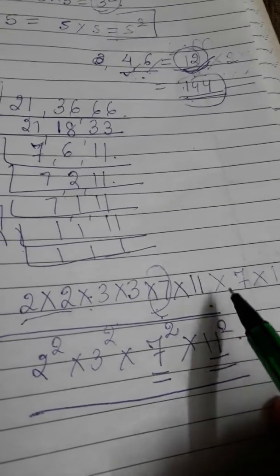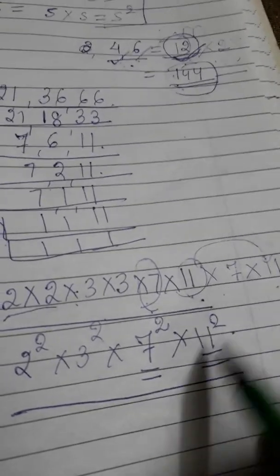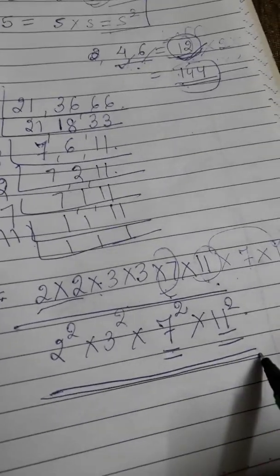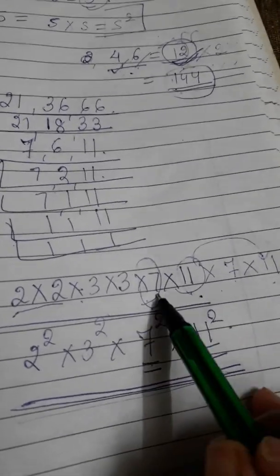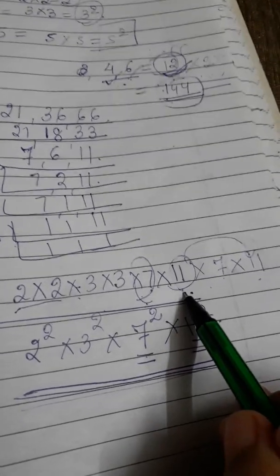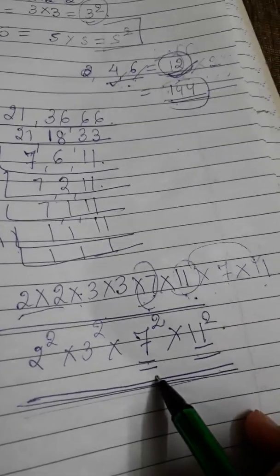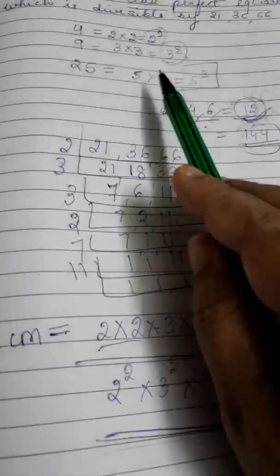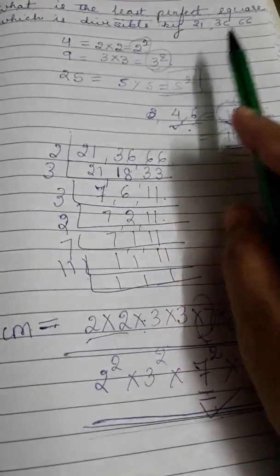What I am doing? I am making it a square number. 11 × 11 = 11². 7 × 7 = 7². So this new number what you got after multiplying with 7 and multiplying by 11 is a square number. So this is a perfect square which will be divisible by 21, 36, and 66.